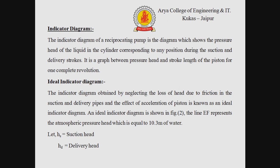Now we discuss the indicator diagram. The indicator diagram of a reciprocating pump is a diagram showing the pressure head of the liquid in the cylinder corresponding to any position during the suction and delivery stroke. It is a graph between pressure head and stroke length of the piston for one complete revolution. The ideal indicator diagram is obtained by neglecting the loss of head due to friction in the suction and delivery pipes and the effect of acceleration of the piston.